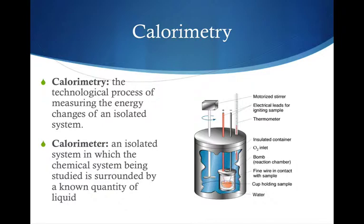You produce an isolated system in this process. The isolated system is the calorimeter — this is the isolated system in which the chemical system being studied is surrounded by a known quantity of liquid. You have a motorized stirrer, so it helps increase the rate of temperature change. You have electrical leads for igniting a sample.